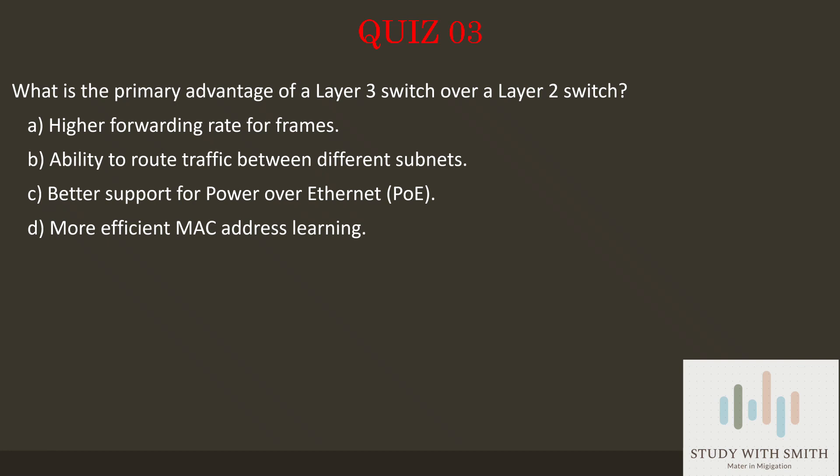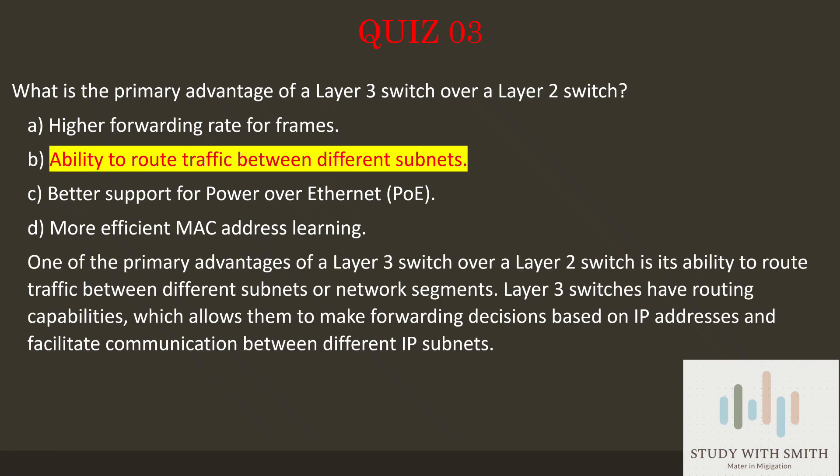The answer is B — Ability to Route Traffic Between Different Subnets. One of the primary advantages of a Layer 3 switch over a Layer 2 switch is its ability to route traffic between different subnets or network segments. Layer 3 switches have routing capabilities, which allows them to make forwarding decisions based on IP addresses and facilitate communication between different IP subnets.